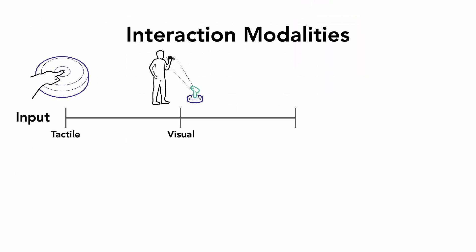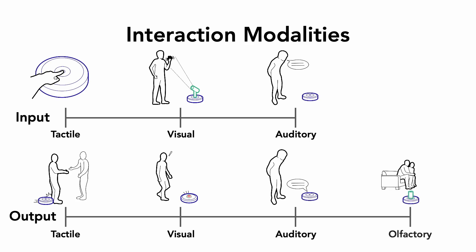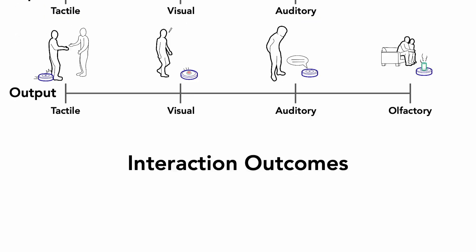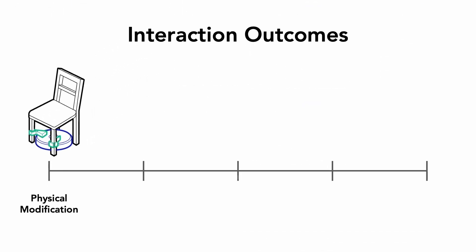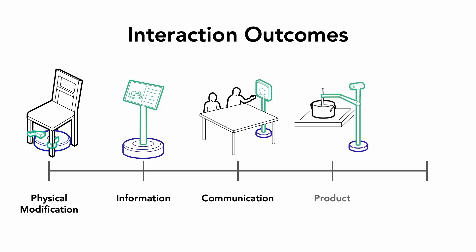We also explore interaction modalities, detailing how robots interact through tactile, visual, and auditory inputs. In the interaction outcomes dimension, we measure effects like physical modifications and the production of tangible goods, showcasing robots' potential to enhance daily life.